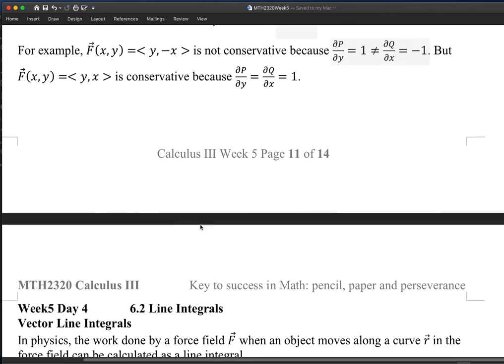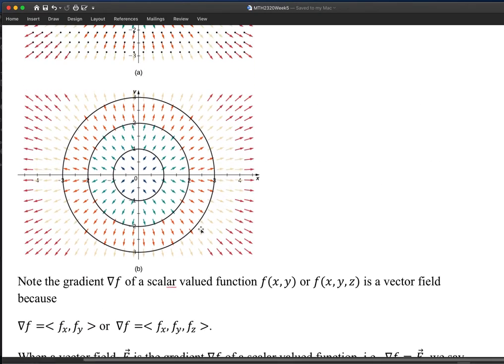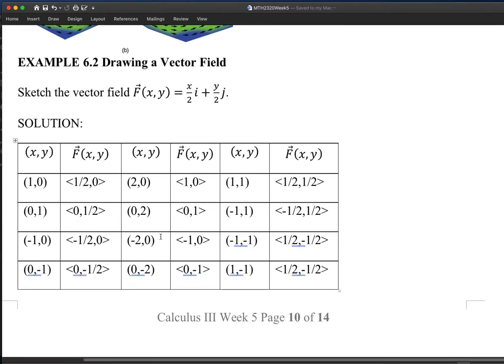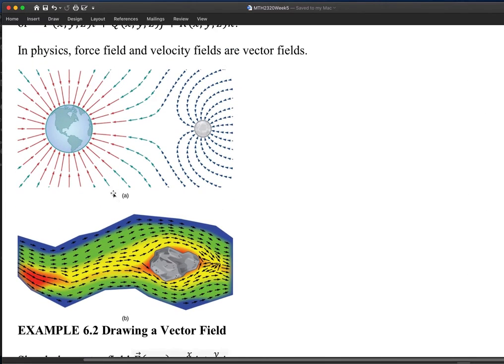Maybe I'm going to move a little back to this. This is a force field, or maybe let's look at the gravity field. Just consider the part with the red arrows, because everything is attracted to the earth by gravity. When the object is getting closer to the earth, the gravity is stronger.